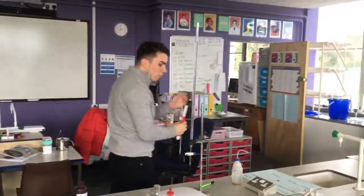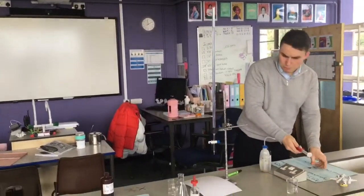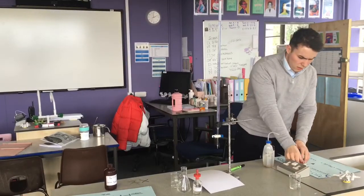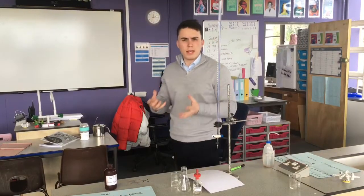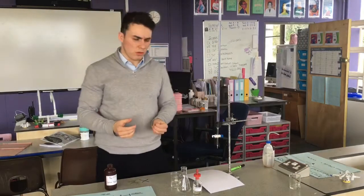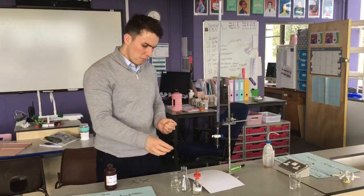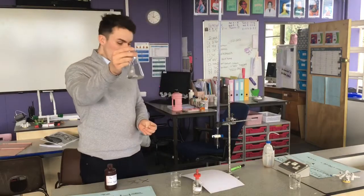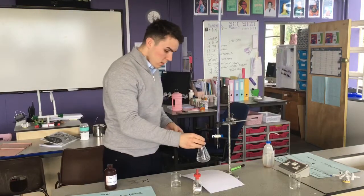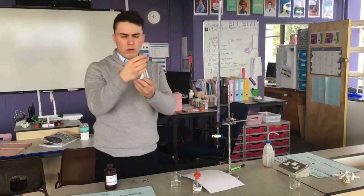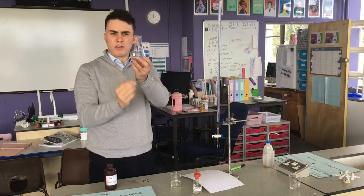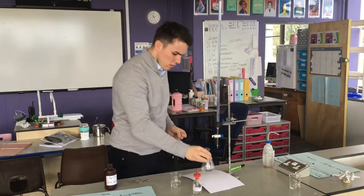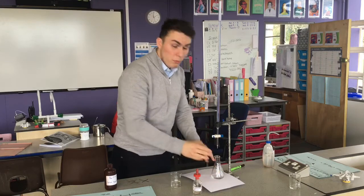If we weren't that worried about being accurate, perhaps we would use a measuring cylinder. But we're looking for real exact values here because we're going to perform some calculations. I'm going to place my conical flask on my white paper.